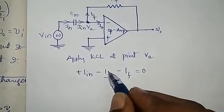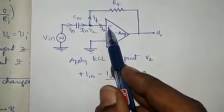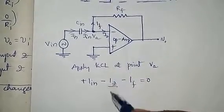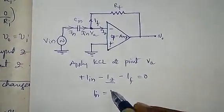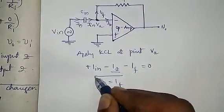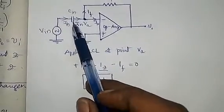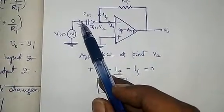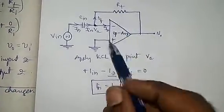According to the virtual ground concept, I_Z equals zero, because the input impedance is very high so there is no current at that terminal. Therefore I_in equals I_F. Now we need to find the input current through the capacitance and the current across the feedback resistor.